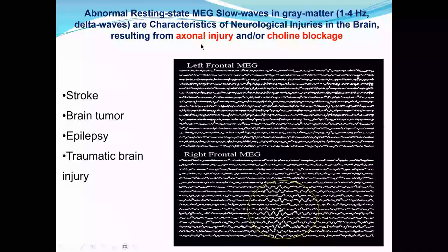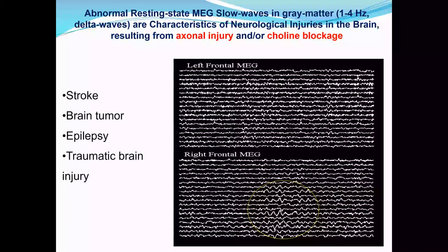This slow wave is associated with neurological injury in the brain and can be due to axonal injury, physical damage, or some neurochemical blockage, such as cholinergic pathway limitation. It's not just happening in TBI — it also happens in patients with stroke, brain tumor, and epilepsy.